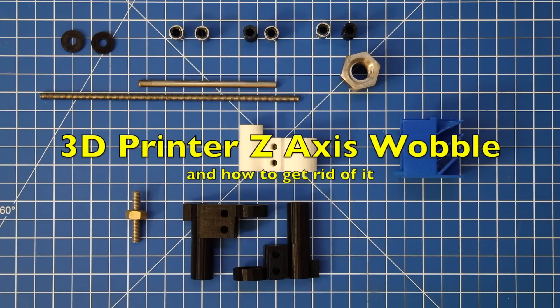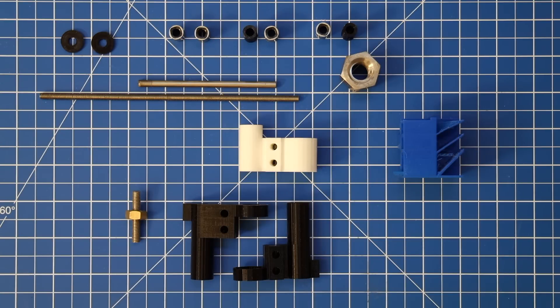In today's video we'll be taking a look at a problem of 3D printing called z-axis wobble, which is quite common and pretty hard to get rid of.